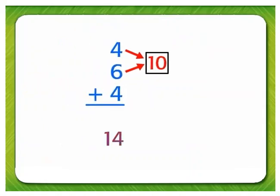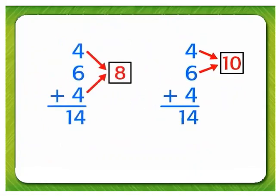No matter how you group the addends, the sum of 4 and 6 and 4 is 14.